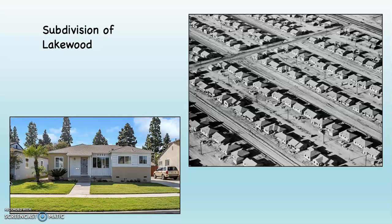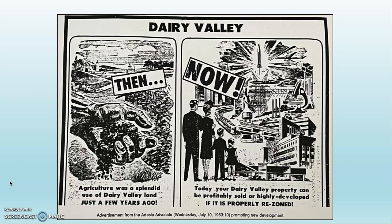This happened in the 1960s and 1970s with dairy farming in Cerritos, Artesia, and La Palma. Here's an ad from the Artesia Advocate from 1963: 'Agriculture was a splendid use of dairy land just a few years ago. Now, today, your Dairy Valley property can be profitably sold and highly developed if it is properly rezoned.' You go from farms to urbanization — that's what it's telling you.